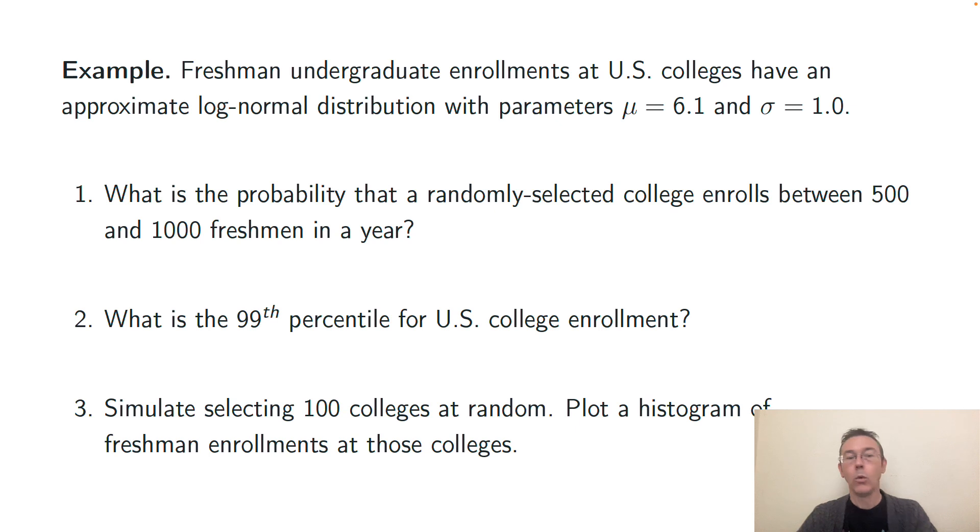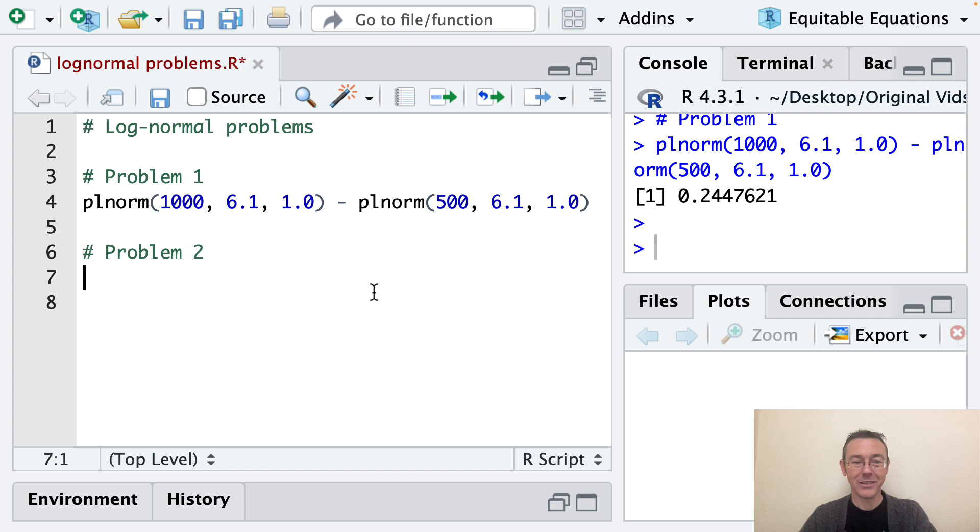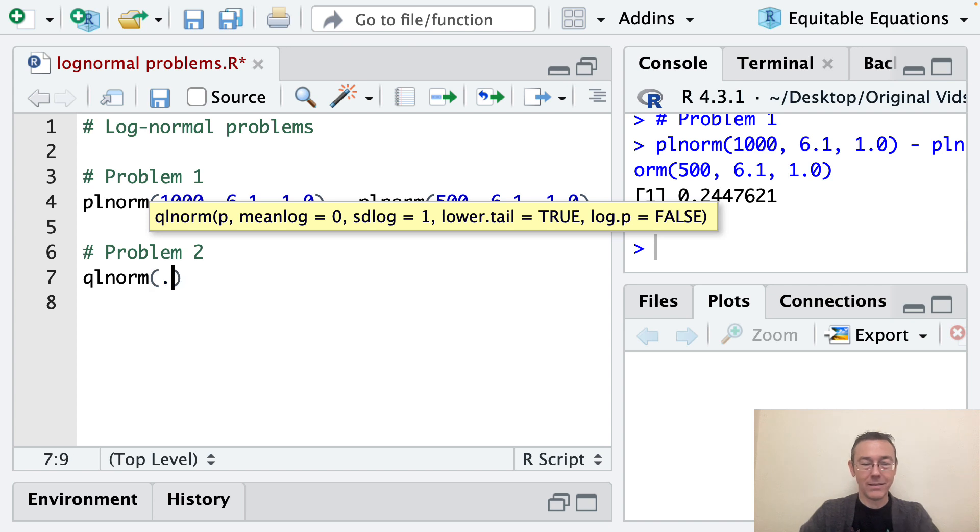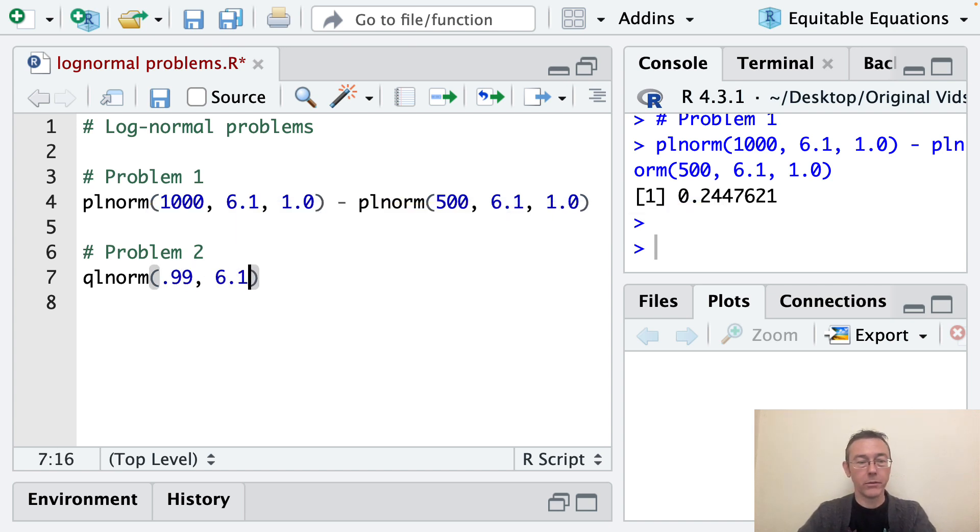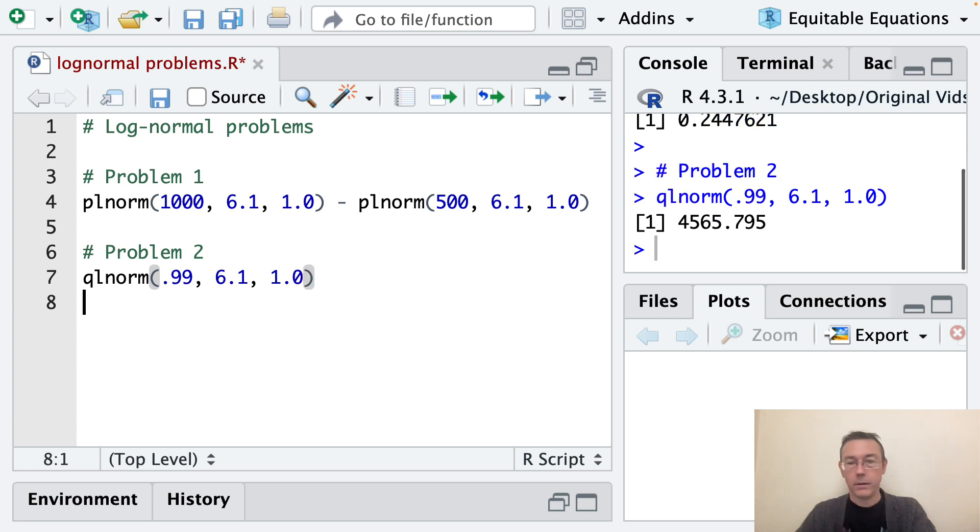Problem two: what's the 99th percentile for U.S. college enrollment? This is going to be a qlnorm problem. In this case, instead of being given values and being asked to find a probability, we're given a probability in the form of a percentile and asked to find a value. So qlnorm. In this case, the value we're going to plug in is going to be 0.99, and then as before, I have to put in my two parameters, 6.1 and 1.0. So in this case, we get a 99th percentile for the freshman enrollment of 4,566 undergraduates.